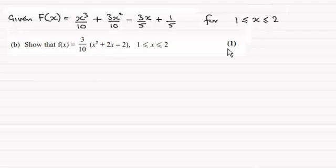And for part B now, we've got to show that the probability density function, little f of X, equals 3 tenths of X squared plus 2X minus 2, defined for X between 1 and 2 inclusive, for one mark.